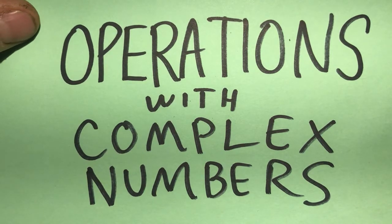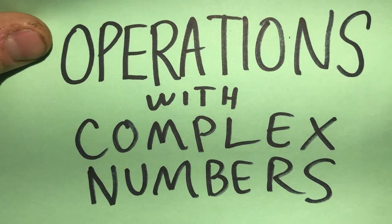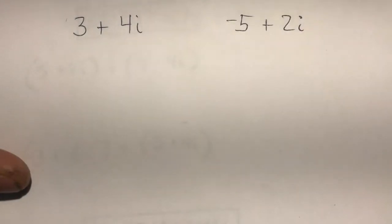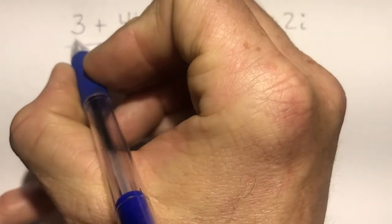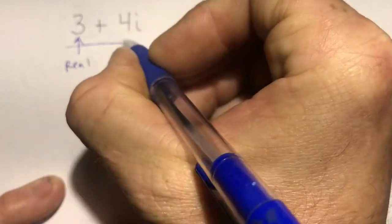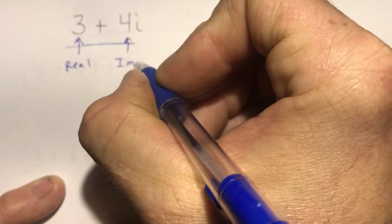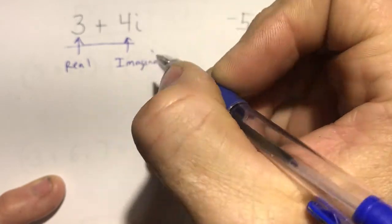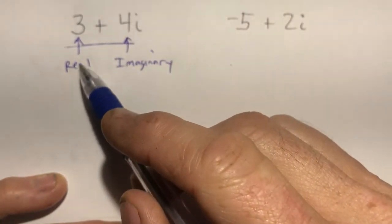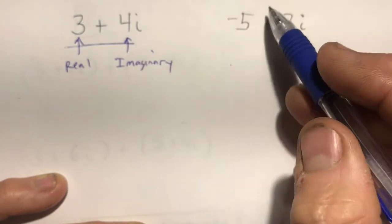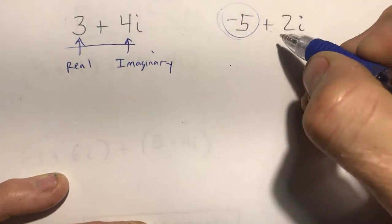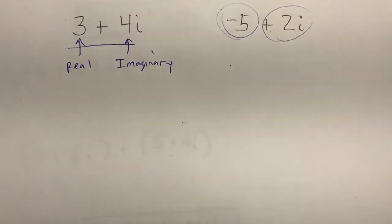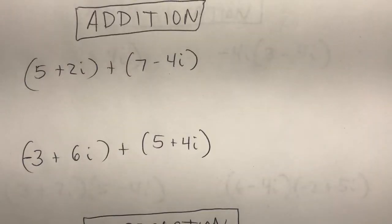We're looking at operations with complex numbers. These are called complex because in this number you have a real part and an imaginary part. A complex number has a real and an imaginary part. Here my real part is negative five and my imaginary part is positive 2i.